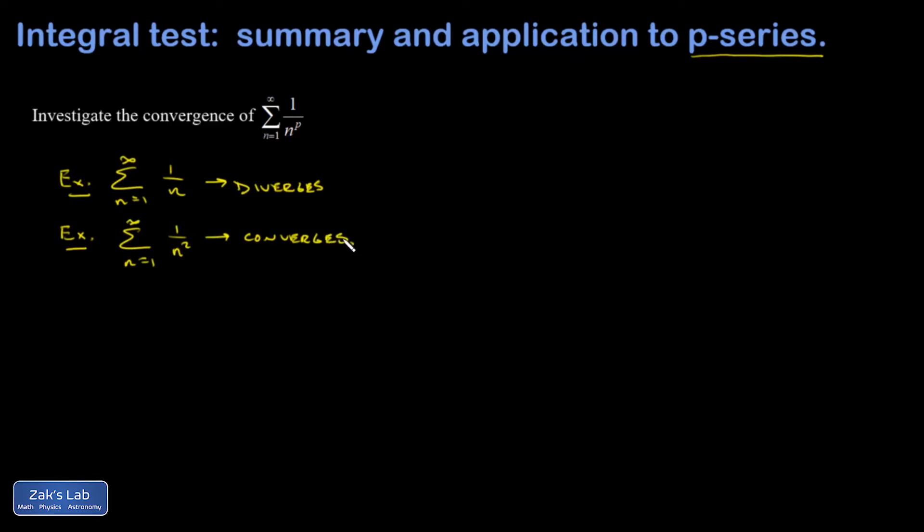Now we're trying to nail down, in general, if I see something of the form 1 over n to the p, will it converge or diverge? And can we come up with a simple rule for what p has to be to decide which way it's going to go? So we're going to perform the integral test on this thing and look at the integral from 1 to infinity of 1 over x to the p dx.